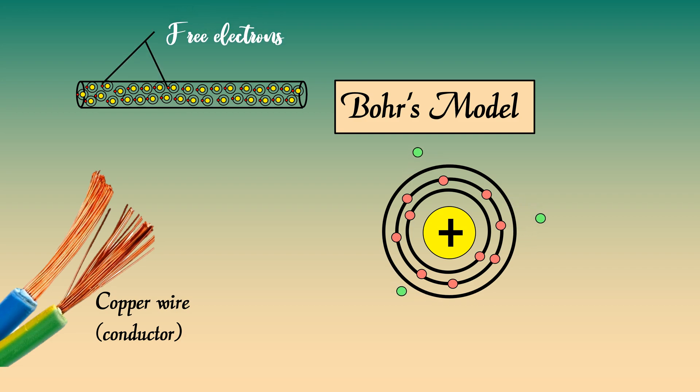We know that current is a flow of electrons. But how exactly does the flow of these free electrons occur? To know about this, continue watching.